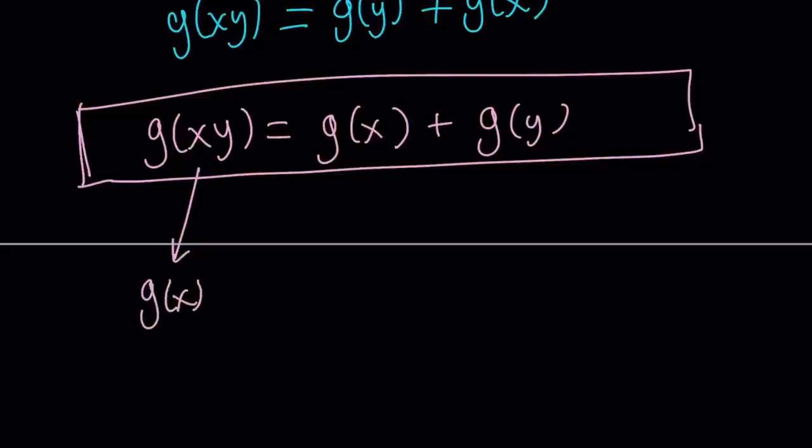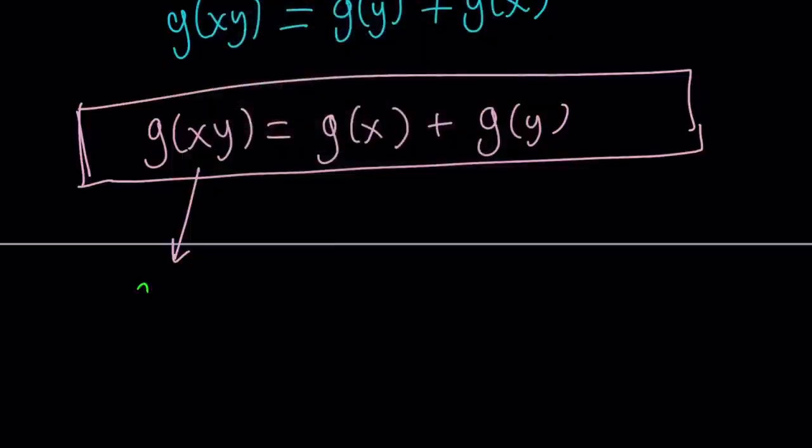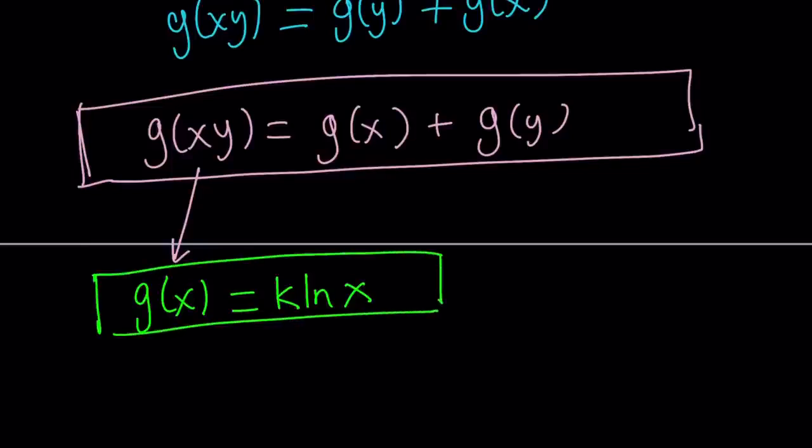So from here, g of x can be written as k times ln x. Now, you can use any base here, but the constant k actually takes care of it. So we don't have to use, it could also be log x, but a constant will also work. So this kind of represents all bases in this case.